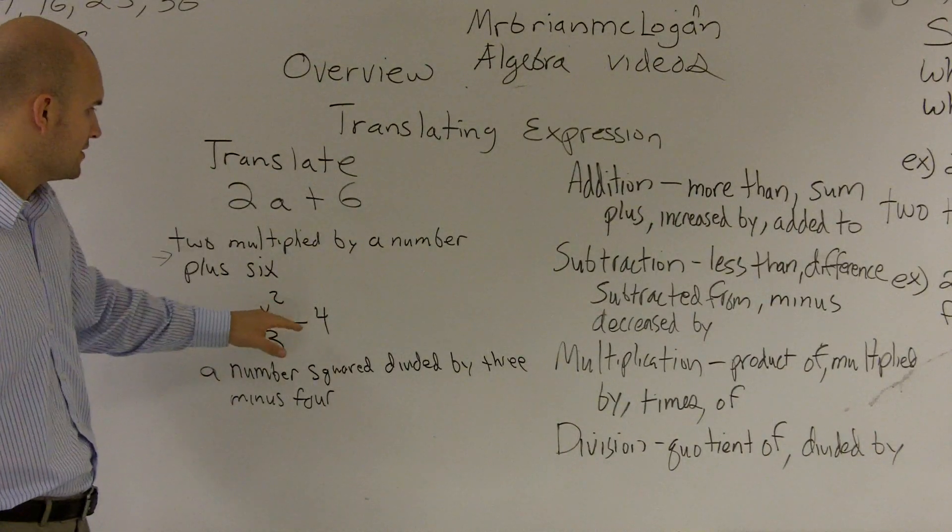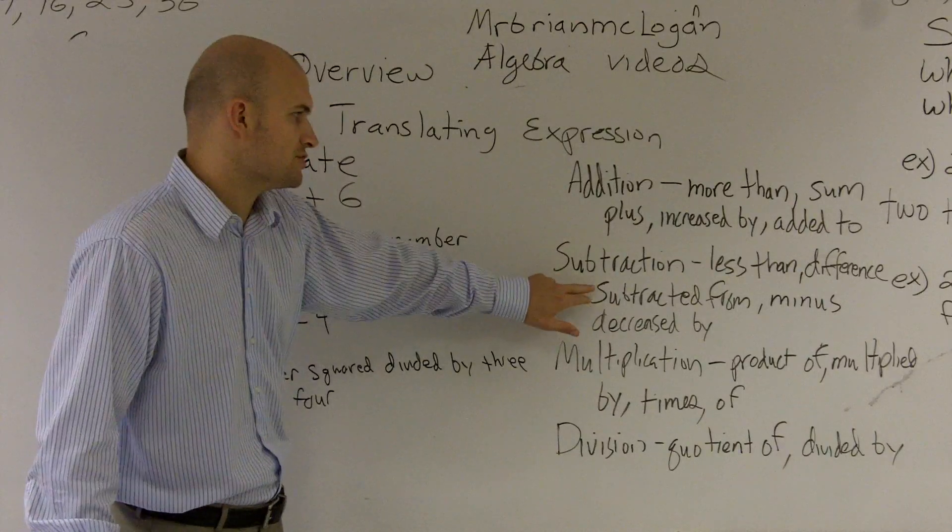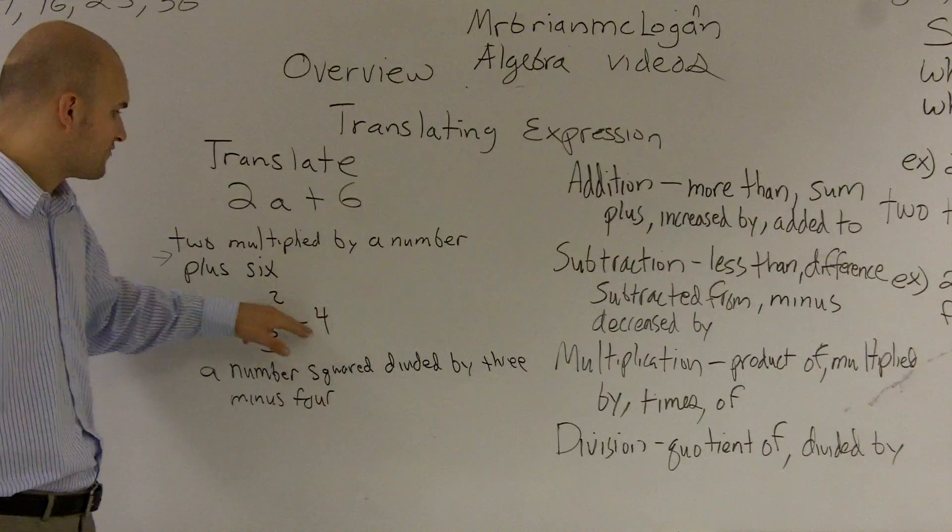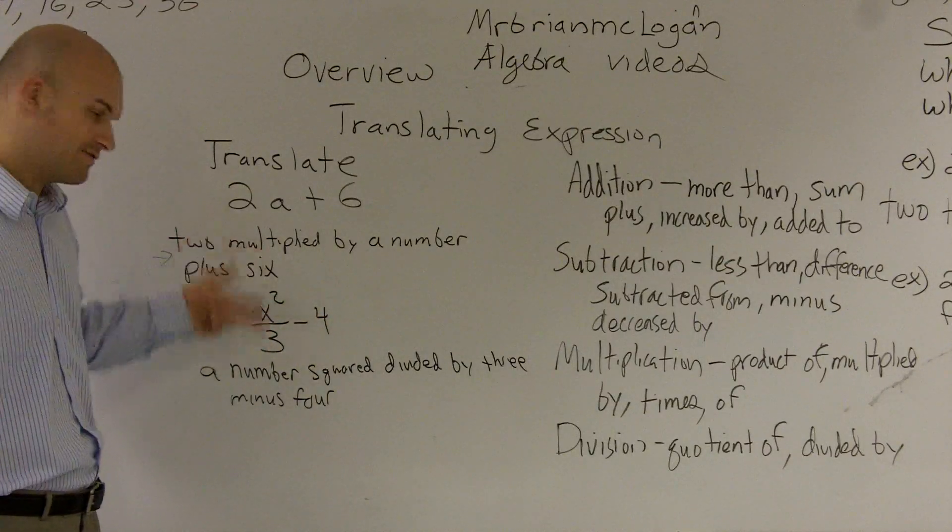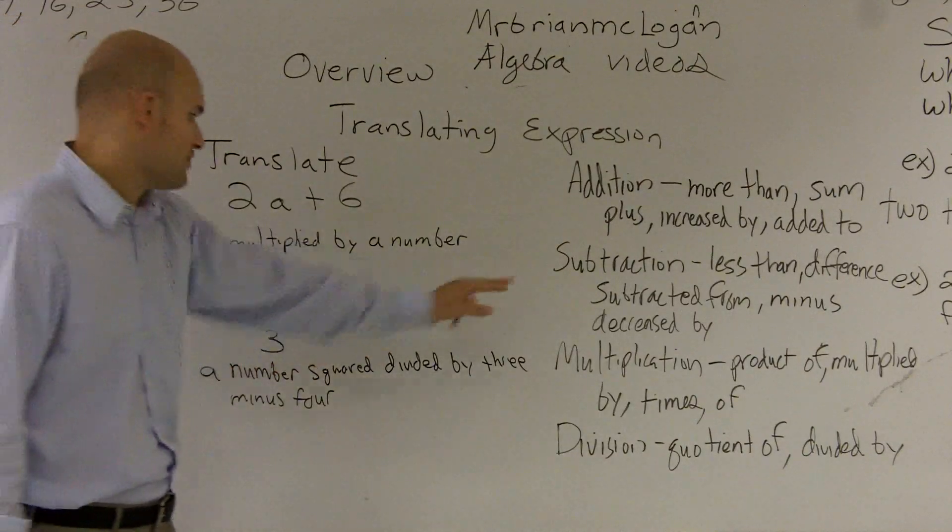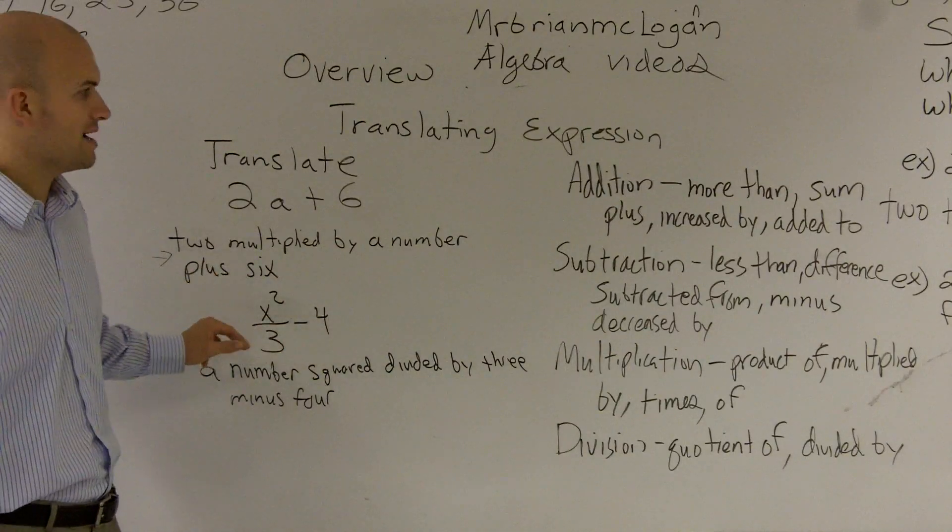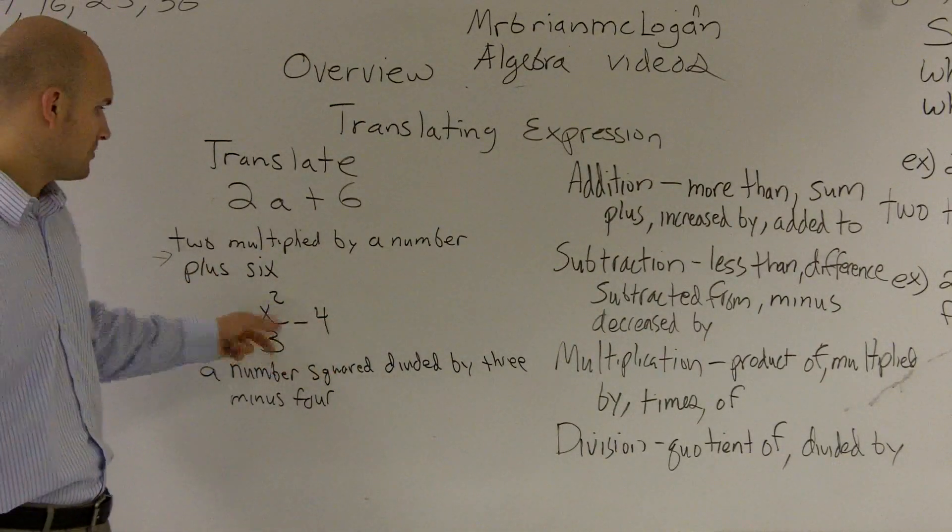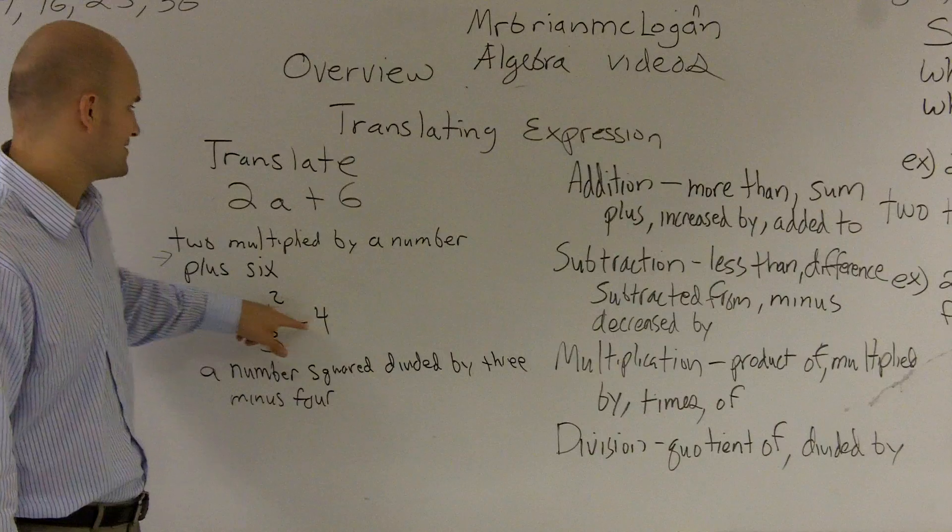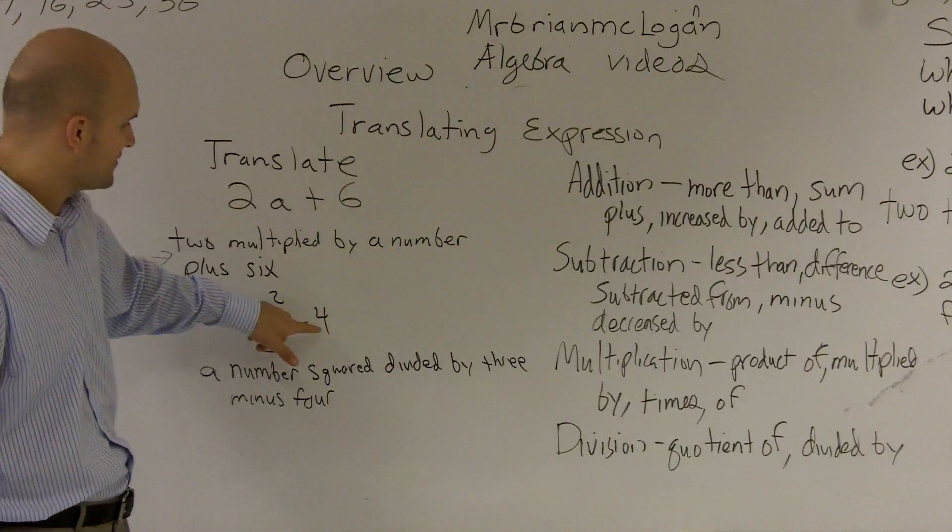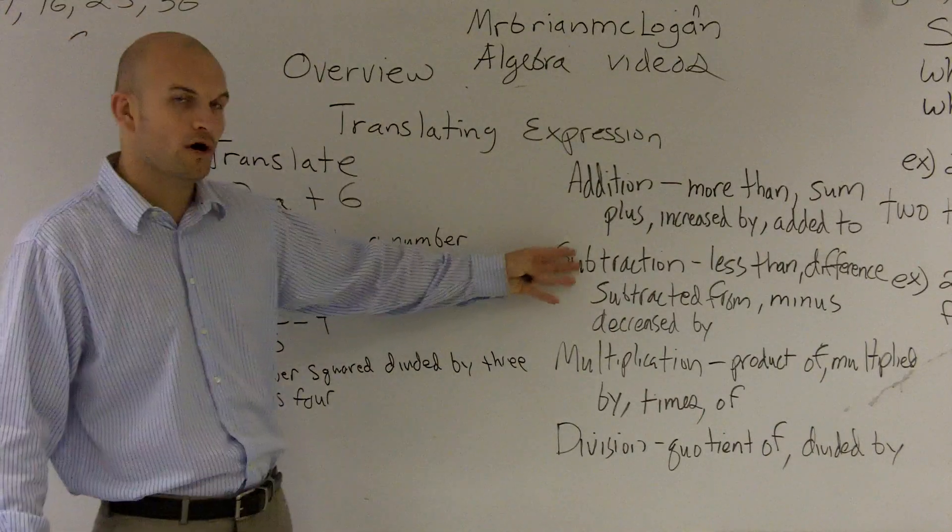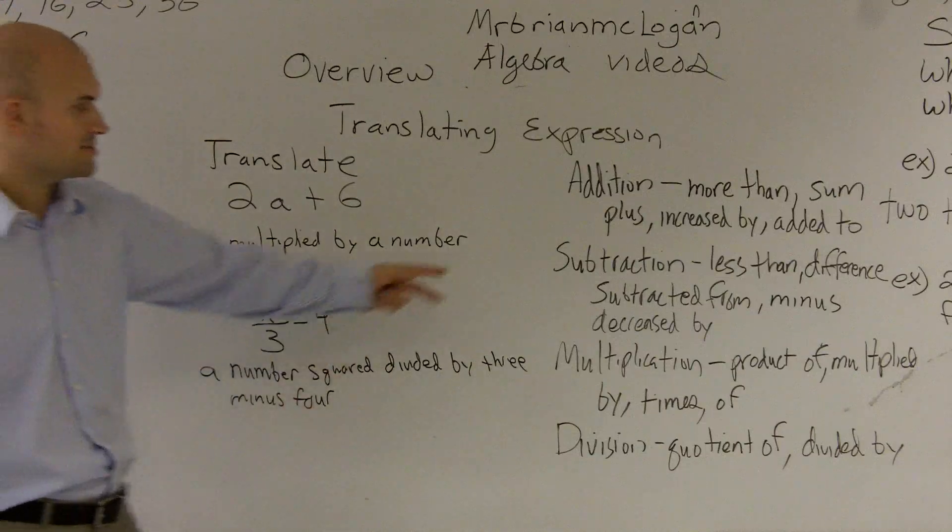And what you guys will be able to notice is there's a lot of different ways we can use these words to represent our algebraic expression. You know, because you could also say if you're going to use, but you've got to be careful because if you're going to use subtracted from, you'd have to say 4 subtracted from this term right here. And you'd have to go and spell that term because you can't say a number squared divided by 3 subtracted from 4 because that would actually have to be the other way around. Or you can't say less than 4 because actually it's, or you have to say it's, yeah, this is actually less, or no, sorry, 4 is less than this term over here.